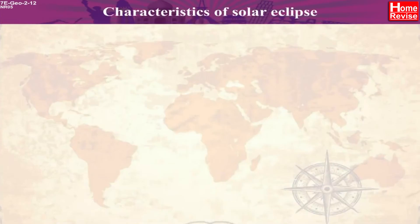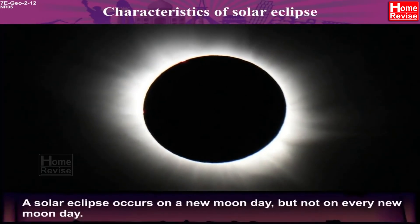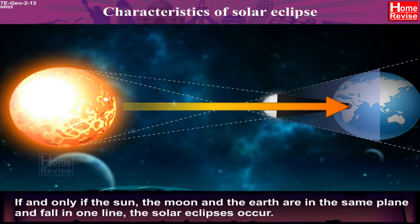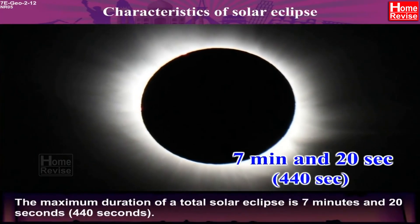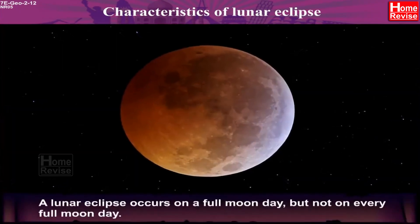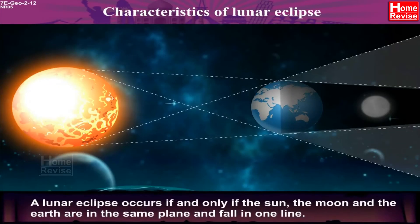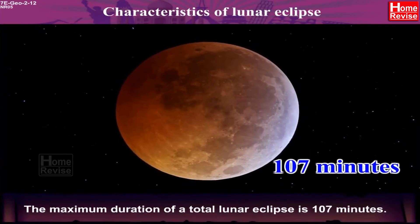Characteristics of Solar Eclipse: A solar eclipse occurs on a New Moon day, but not on every New Moon day. If and only if the Sun, the Moon and the Earth are in the same plane and fall in one line, solar eclipses occur. The maximum duration of a total solar eclipse is 7 minutes and 20 seconds, i.e., 440 seconds. Characteristics of Lunar Eclipse: A lunar eclipse occurs on a Full Moon day, but not on every Full Moon day. A lunar eclipse occurs if and only if the Sun, the Moon and the Earth are in the same plane and fall in one line. The maximum duration of a total lunar eclipse is 107 minutes.